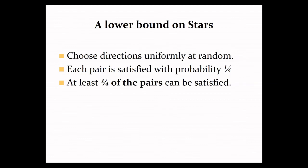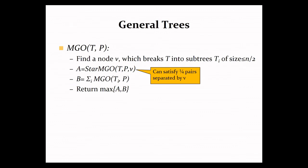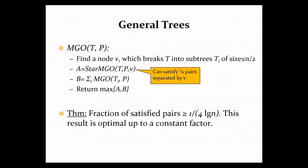It turns out that this subroutine can actually help us in devising a general approximation algorithm for general trees. And let me tell you how it works. So suppose you are given a tree. In a tree, we can always find a node which is called the centroid that breaks it into smaller pieces. Now, if enough pairs are separated by the centroid, we can treat the tree as a star graph, apply our approximation from before and satisfy enough pairs. If not, we can remove the centroid and apply the algorithm recursively on the resulting pieces. And one can show that this algorithm guarantees satisfying a logarithmic fraction of the pairs. And moreover, this result is optimal up to a constant factor.